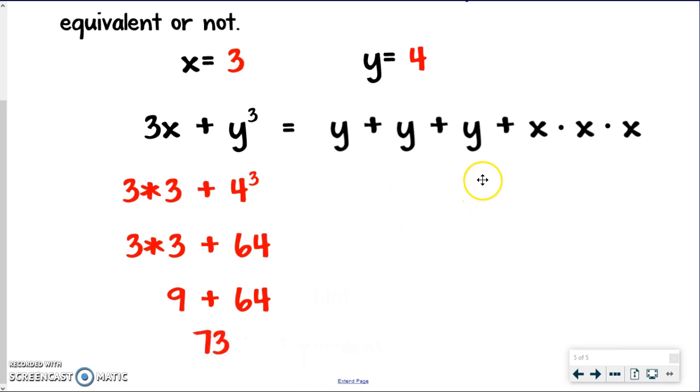So now let's see if we get the same thing over here. All right. So I'm going to substitute 4 in for Y. So I'm going to do 4 plus 4 plus 4. And then plus. And then I've got my X times X times X, which is 3. So I'm doing 3 times 3 times 3. Now real quick, I just want you to pause here for a moment and think about what you know about multiplying a number repeatedly versus adding a number repeatedly.